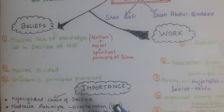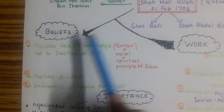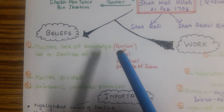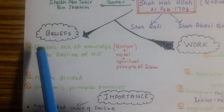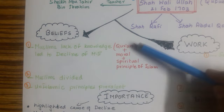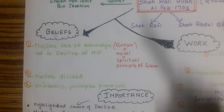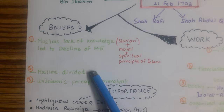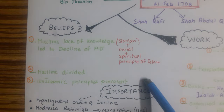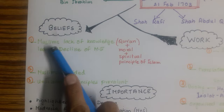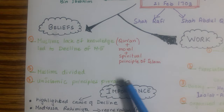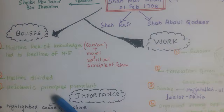Regarding his beliefs: he believed that the decline of the Mughal Empire was due to the lack of education of the Muslims — not just of the Quran, but also their moral and spiritual subservience to other ideologies prevalent at that time. Three things to keep in mind: first, Muslims lacked knowledge; second, Muslims were divided; and third, un-Islamic principles were prevalent. All of these were leading to the decline of the Mughal Empire.